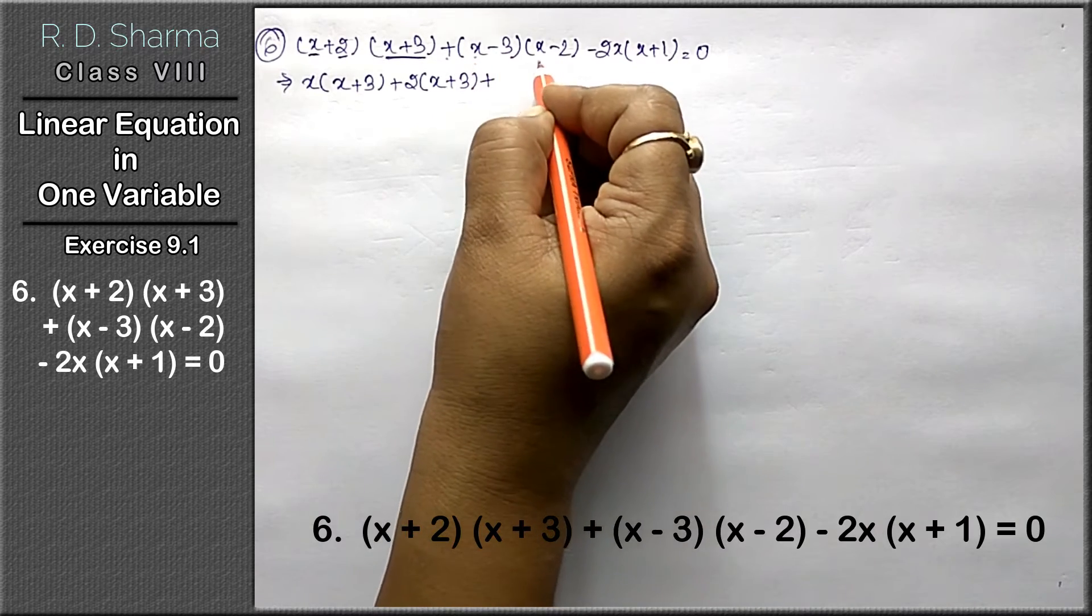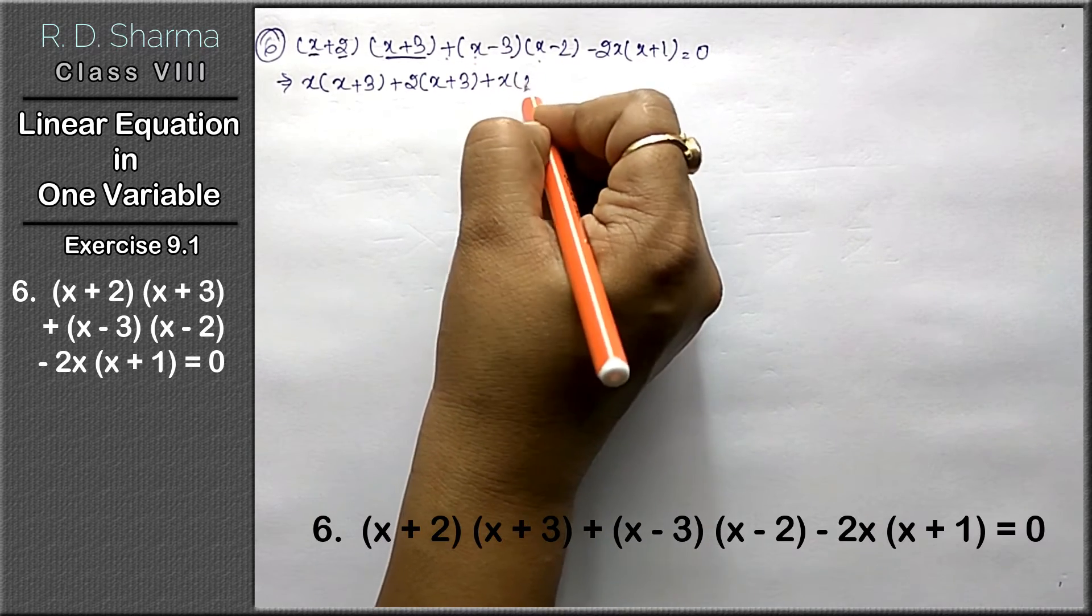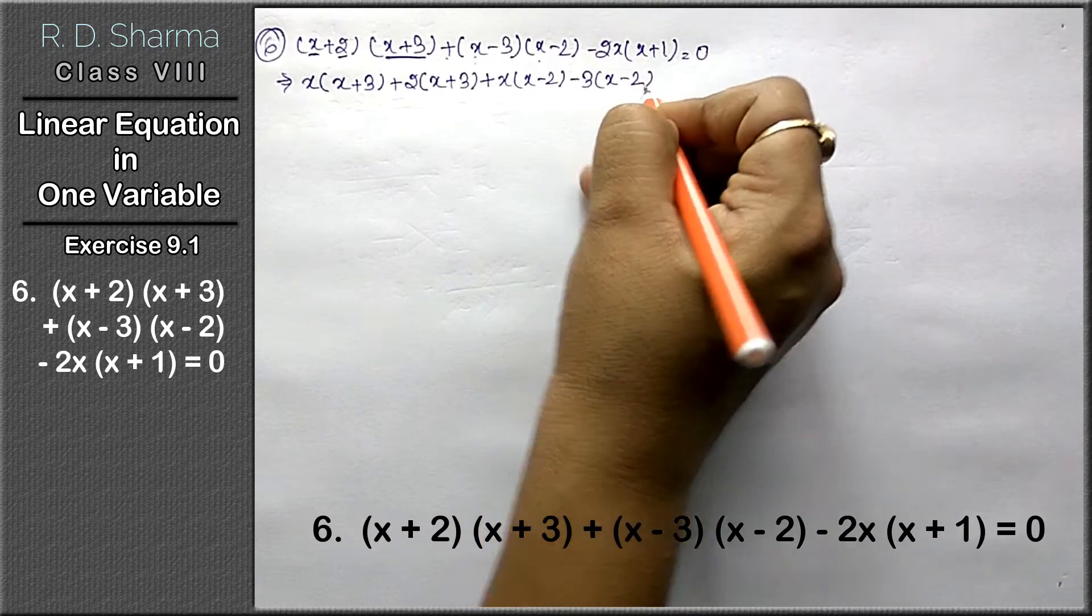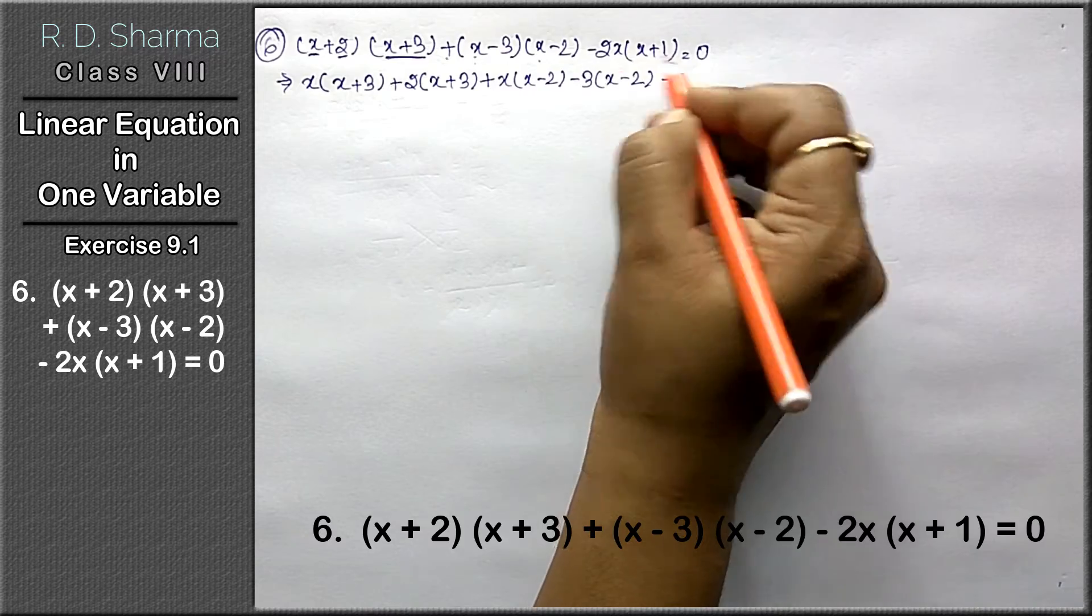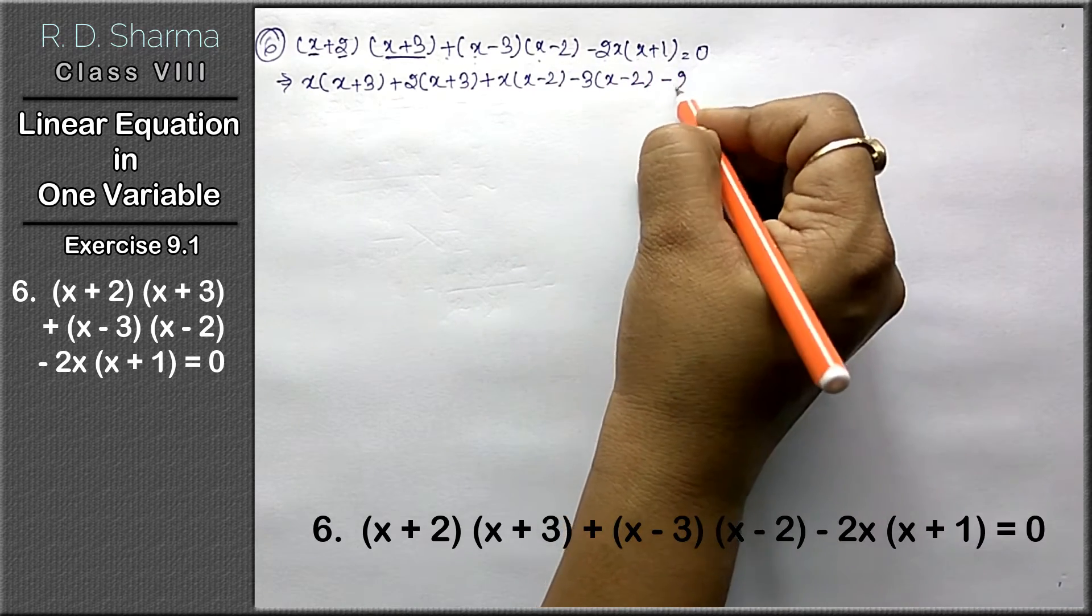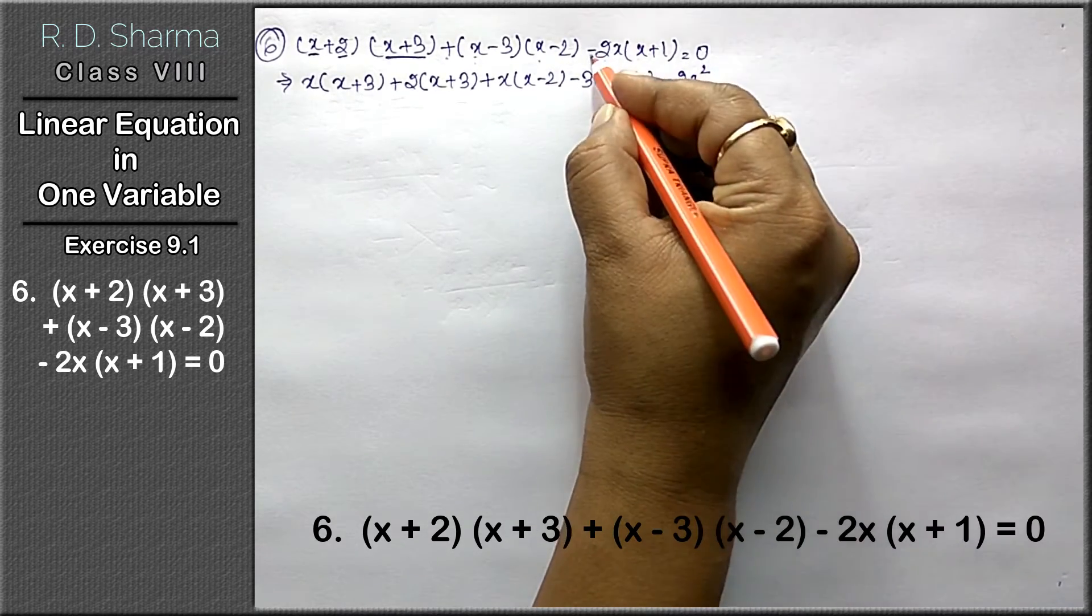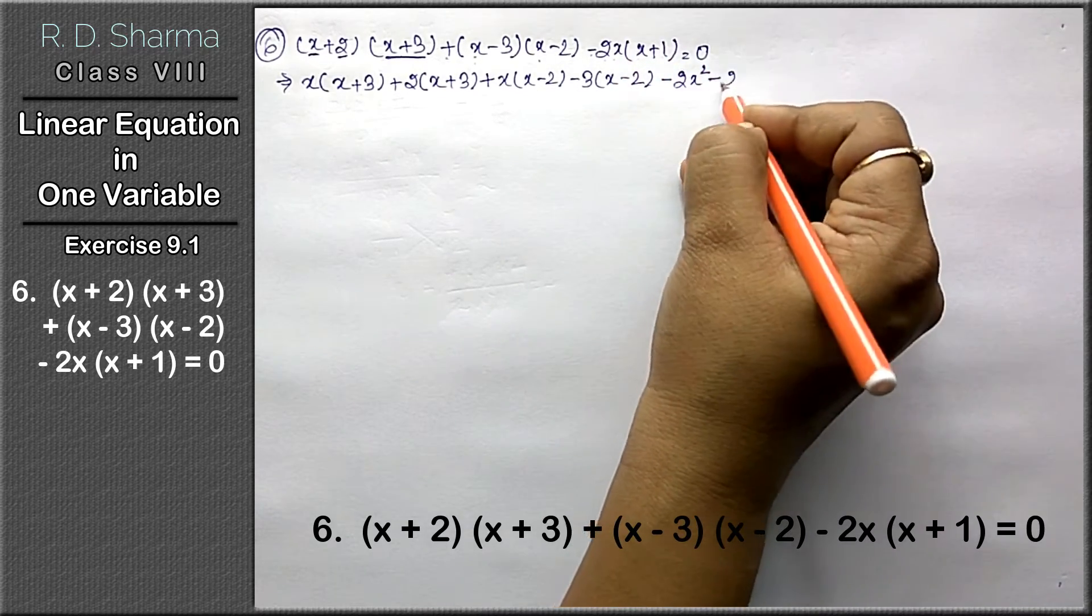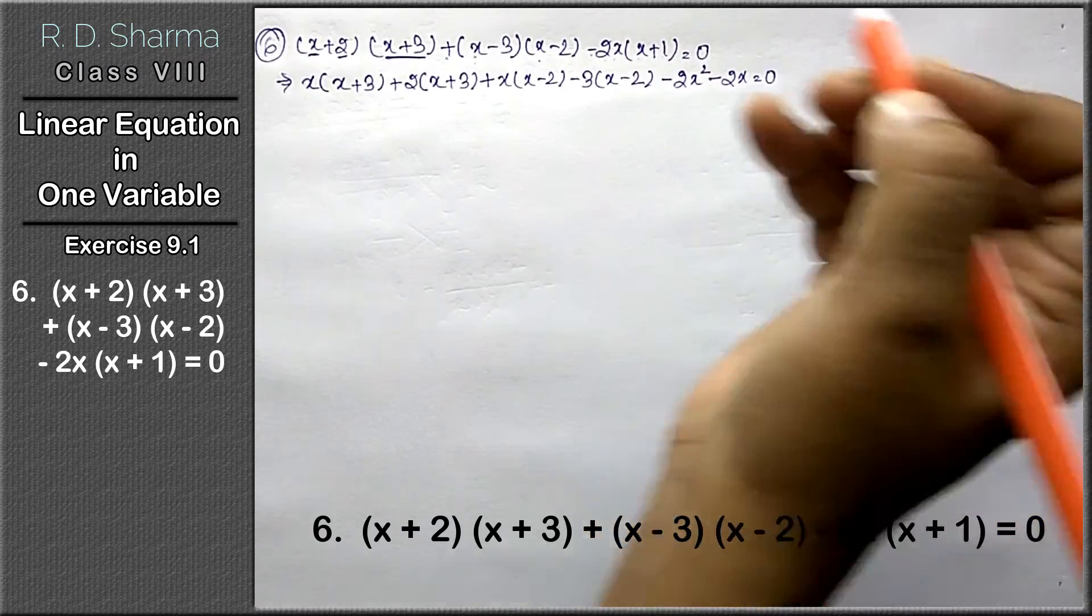First, x multiplies throughout the bracket to get x minus 2, then minus 3 multiplies into x minus 2. Then minus 2x into x gives 2x², and minus 2x into 1 gives minus 2x equals to 0.